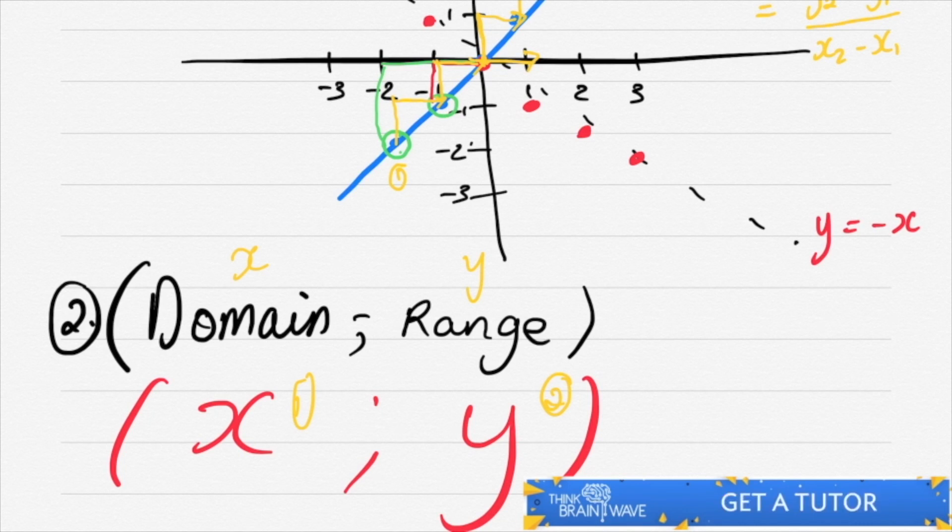The domain itself tells you where the graph will be along the x-axis. What sort of limitations does it have? And the range is the limitations on the y-axis.